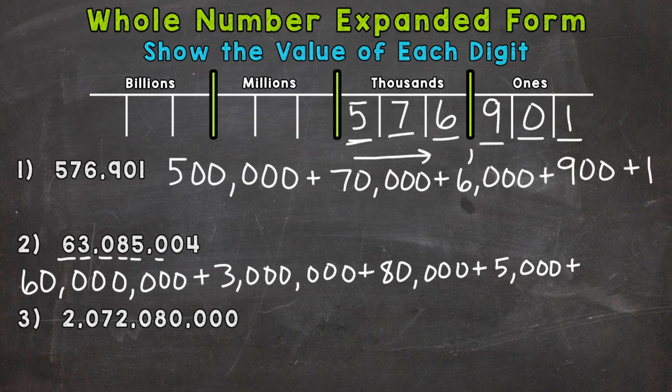Plus we have a zero in the hundreds, zero in the tens. So our next digit here is that four. So a four in the ones has a value of four. And there you have it for number two. So we have the value of each digit expanded out.